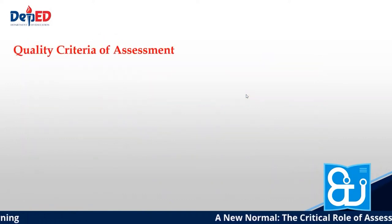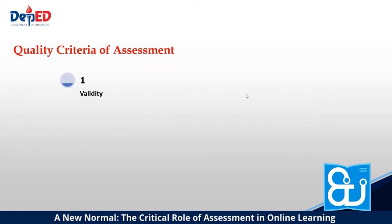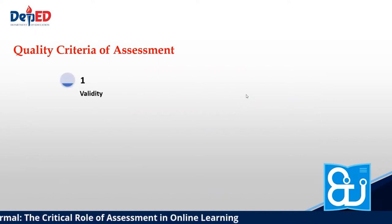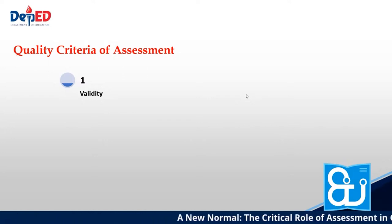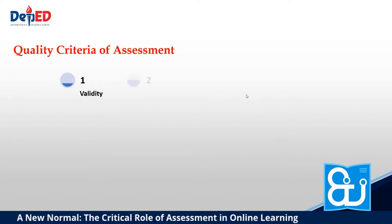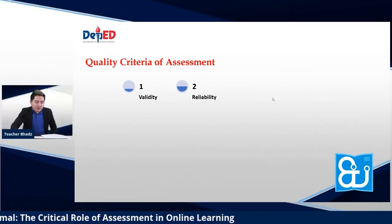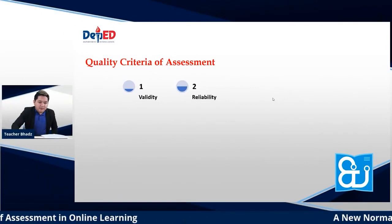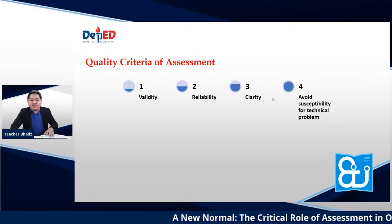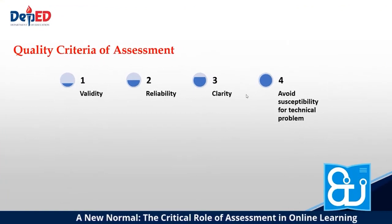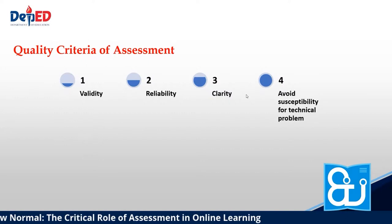We also have quality criteria of assessment. The first is validity, which indicates whether the assessment type covers the learning objectives of the course. Reliability, transparency, and visibility are key components to consider in validity. The second is reliability. The third is clarity. And the fourth is to avoid susceptibility to technical problems. These are the criteria for quality assessment.